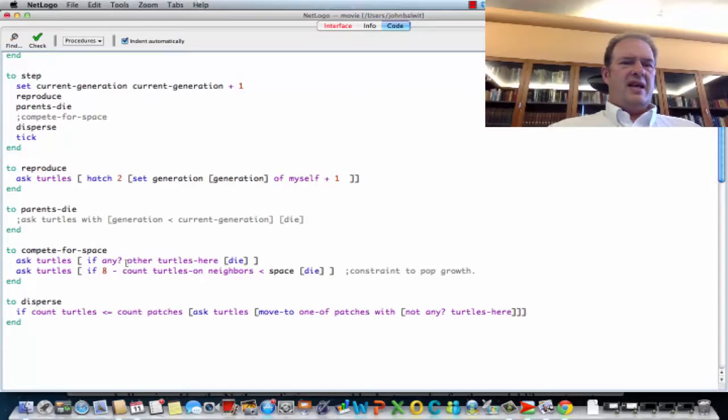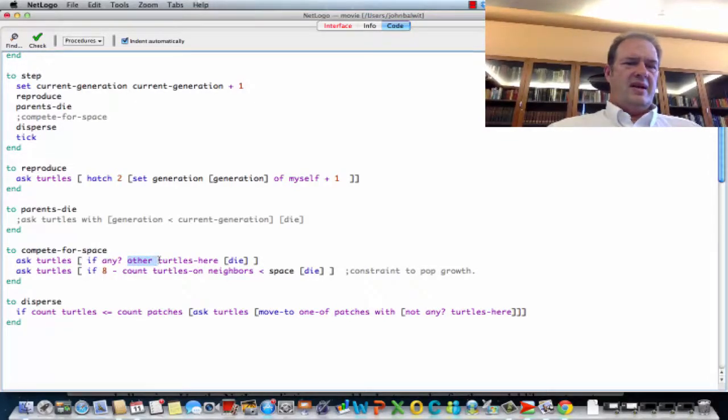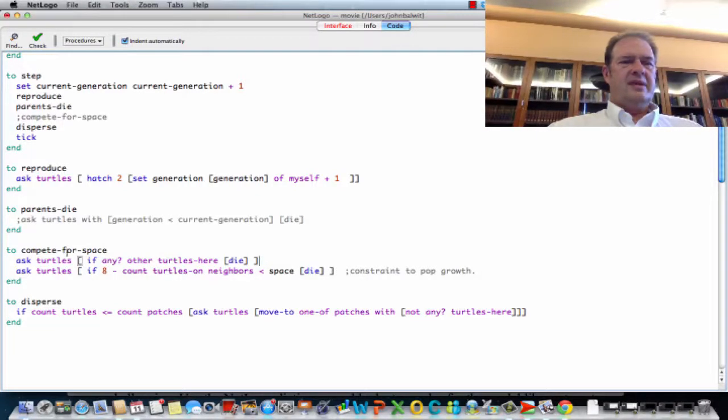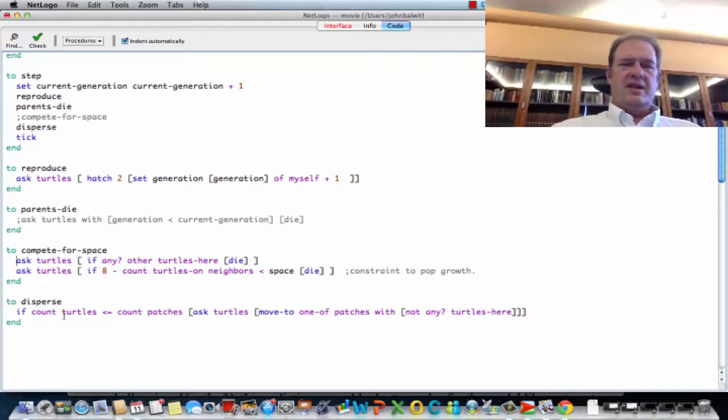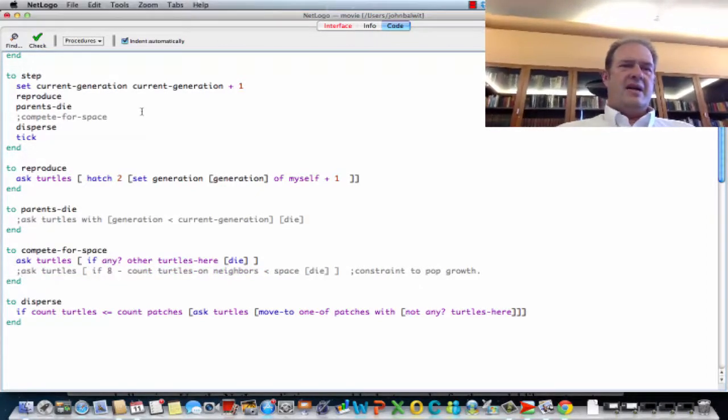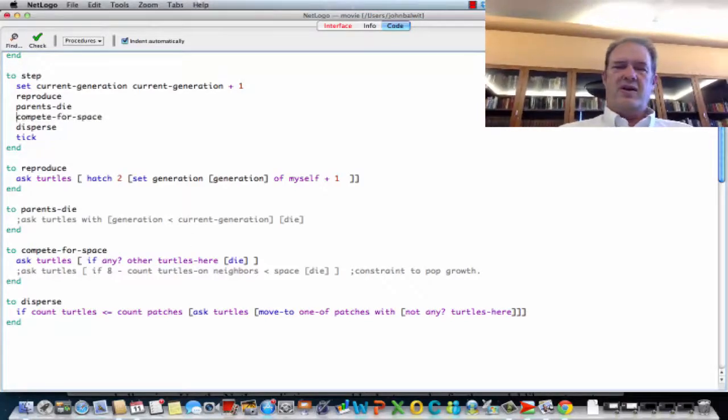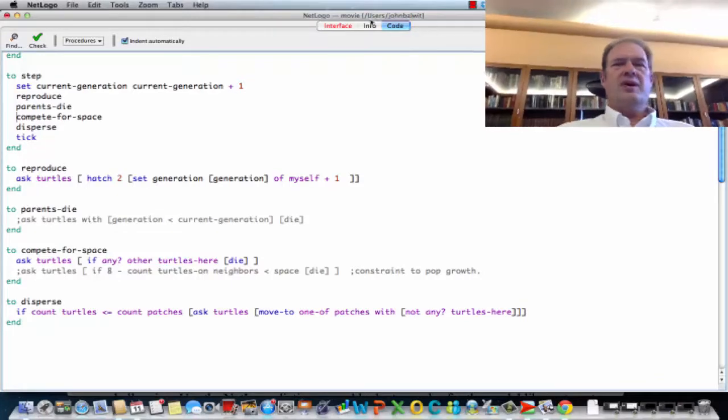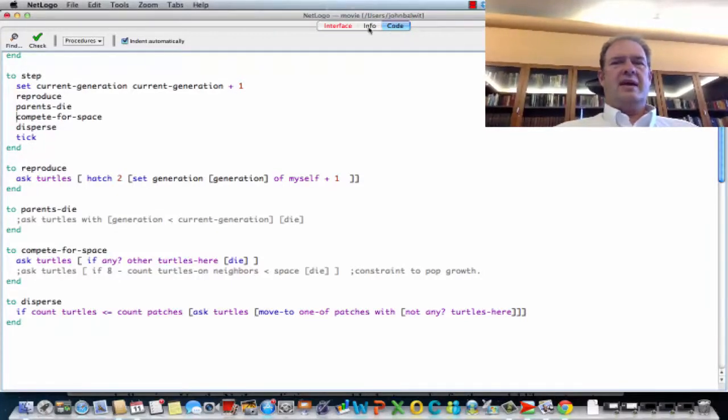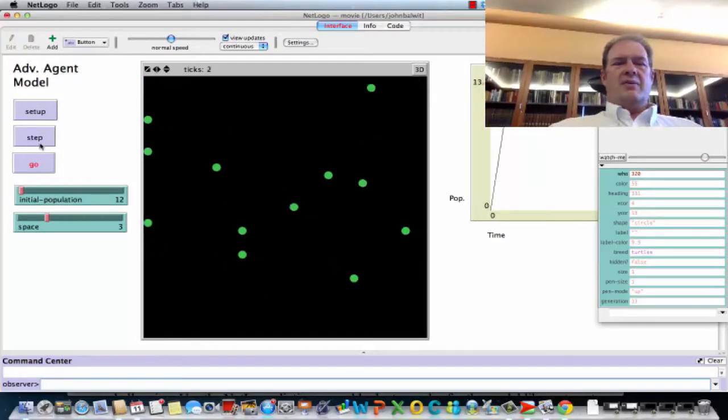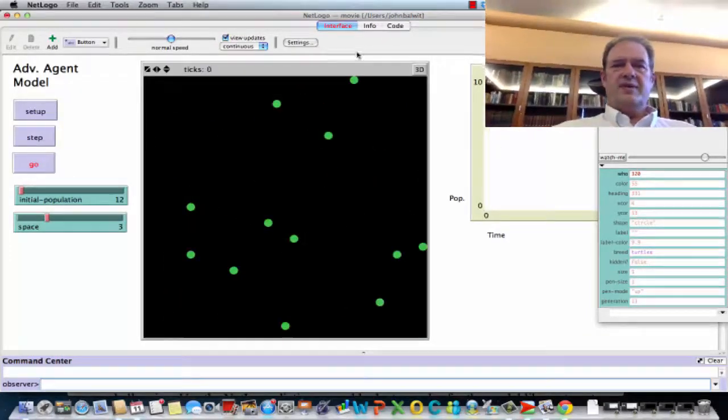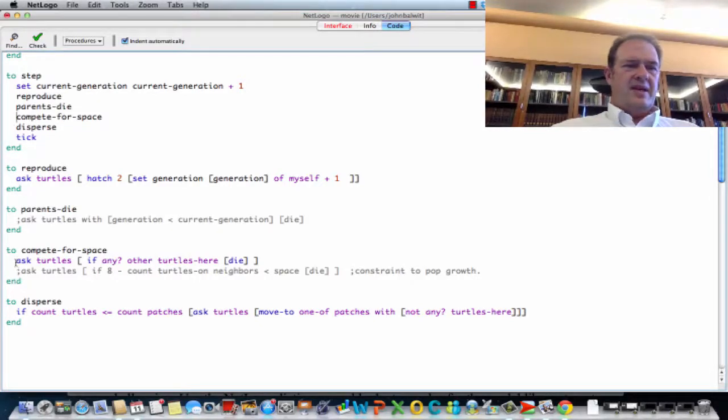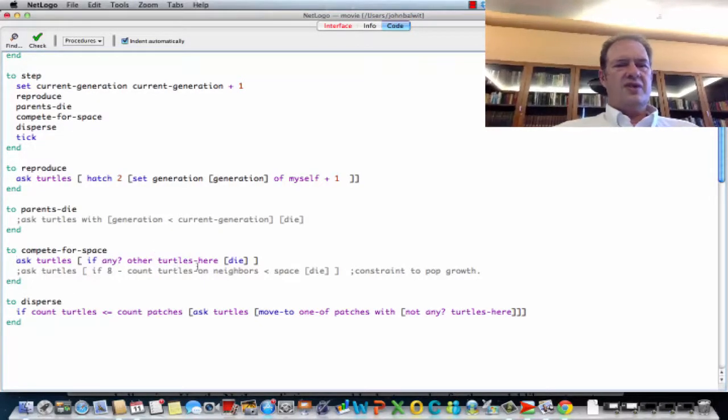Ask turtles if any other turtles here die. Now the other turtles should mean turtles not myself. We're asking all of the turtles. So any, um, I don't think that's the problem. Let's, let's, um, let's kind of adjust this part out. I don't think that this, this could be causing problem. But let's, let's turn this back on. But I, I'm turning off just that second rule in compete for space. And I'm guessing that we're still going to have the same problem that we, hmm. And I guessed wrong. So let's go back to look here. Um, this is the rule here that's causing if any other turtles here die.